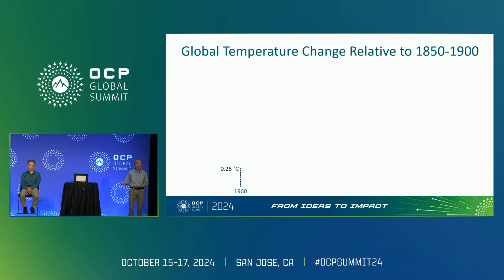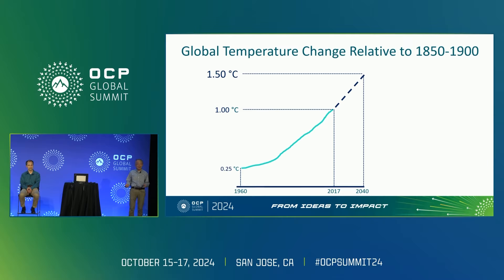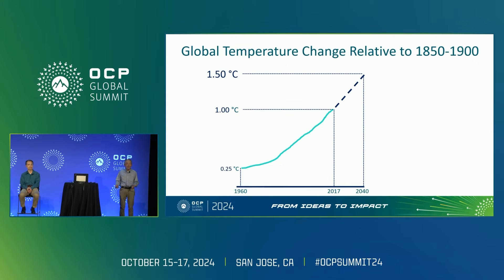Over the next approximately 60 years, we rose to 1 degree C — measured in 2017 — which is a 4x increase. Our expectation is that by 2040 we will reach 1.5 degrees C. This is a very important number because, as the previous slide showed, it will cause significant harm and potentially change our ways of living.